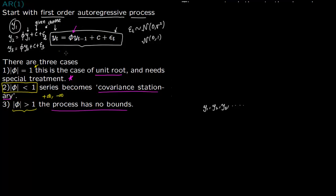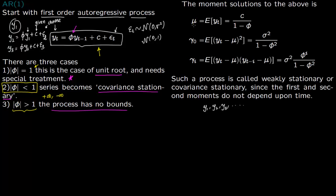If you try to solve this process mathematically, you can find its expectation — the mean of the time series y1, y2, y3, and so on. The mean is simply c over (1 minus phi).